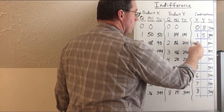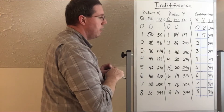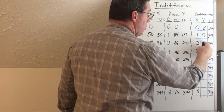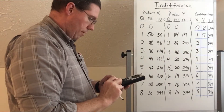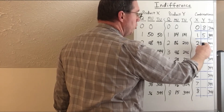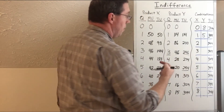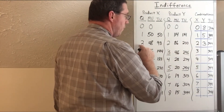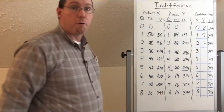Let's see what goes along with two units of product X. Two units of product X gives me 98 utility. So 98 plus some amount of Y should give me 344. I do 344 minus 98, which gives me 246. I need units of Y that give me 246 utility — and that's three units of product Y. So two units of X for 98 and three units of Y for 246 gives us 344.